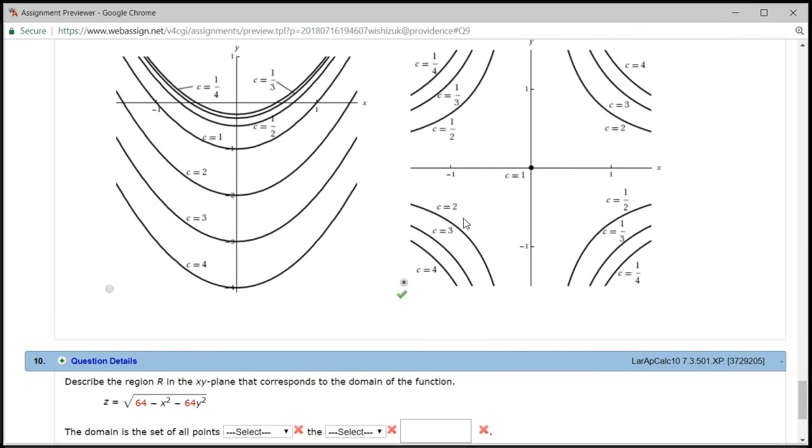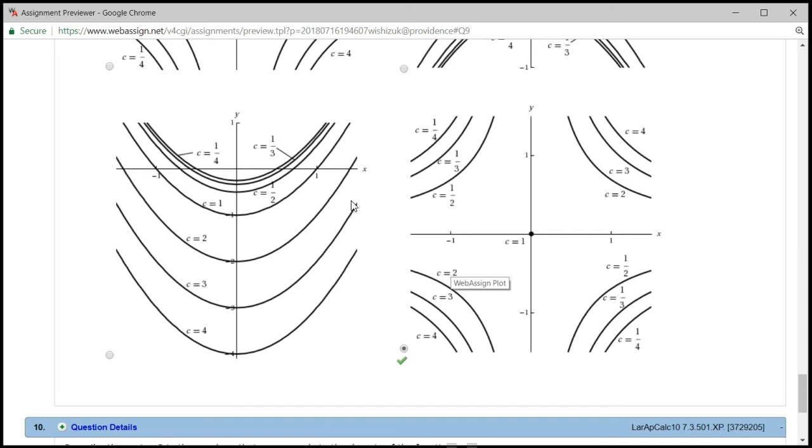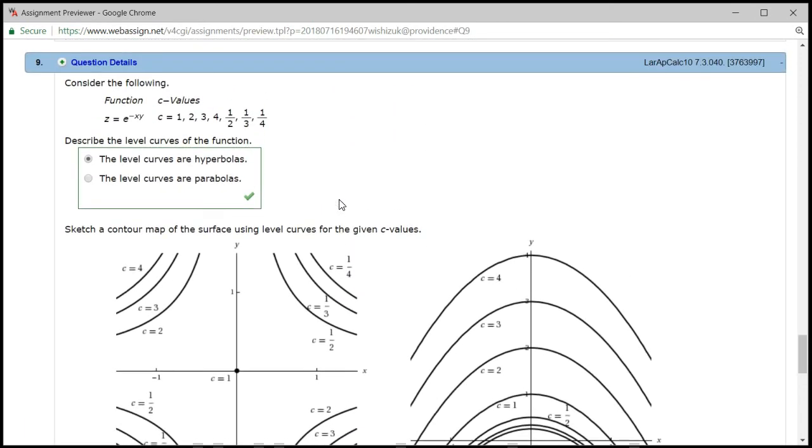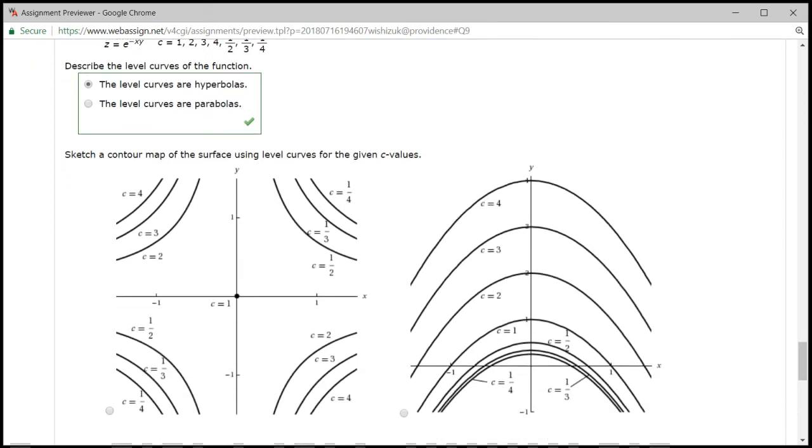It came back as a correct answer. But I think this is a wrong answer. But anyway, I'll see if I can get that fixed. But if not, you can just click on the wrong answer to get the credit. That's it. I hope that this was clear.